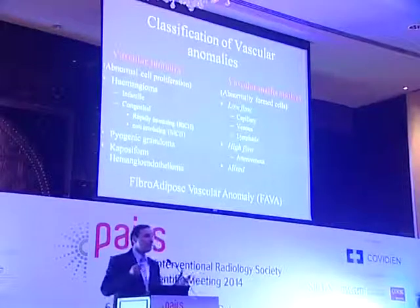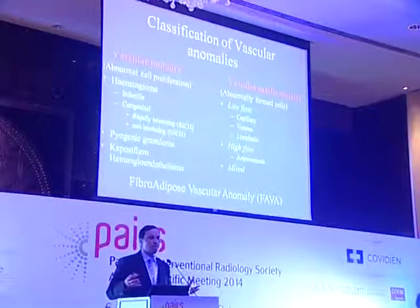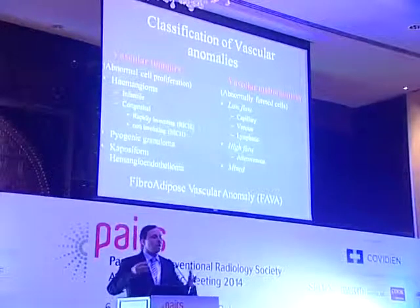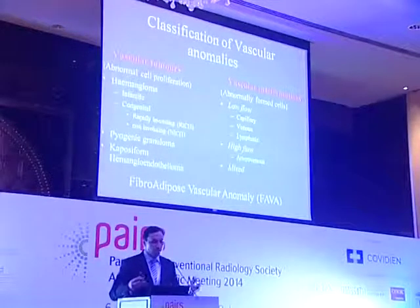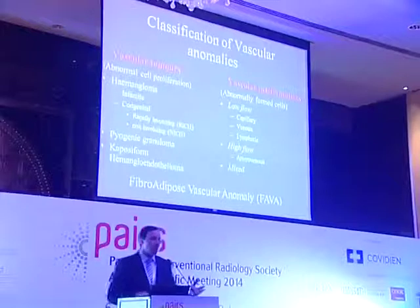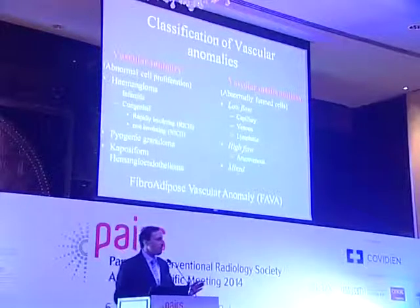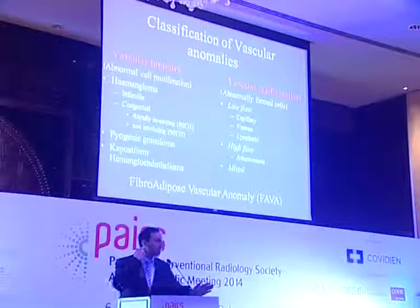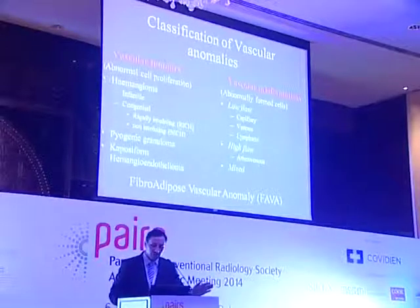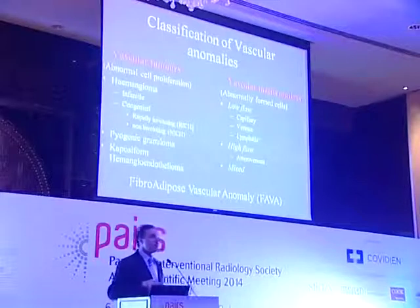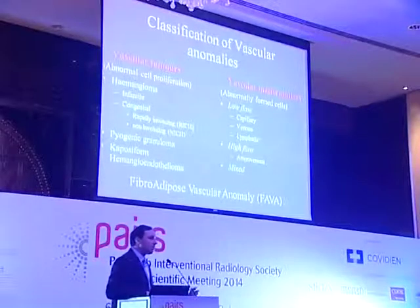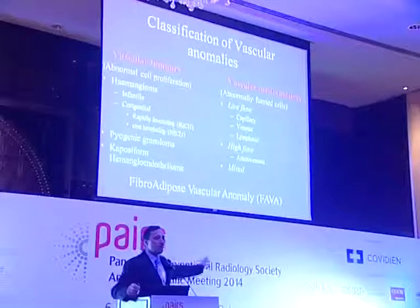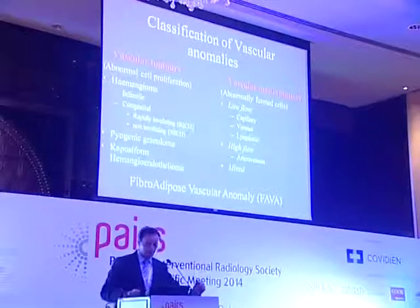Tumors involve mitosis and cell growth, while malformations mean the vessels are abnormally formed with no mitosis. The most common tumor is hemangioma, and the most common malformation is venous malformation. There is a special type recently described by our colleague Ahmed Al-Omari called fibro-adipose vascular anomaly — we'll talk about it in a minute.